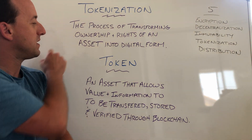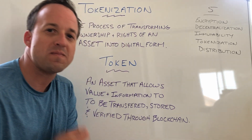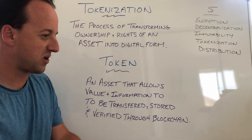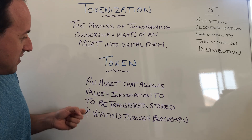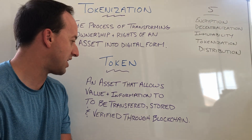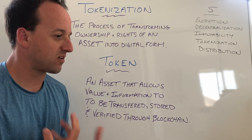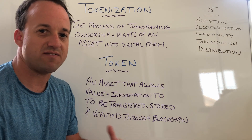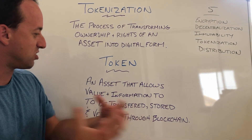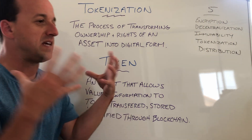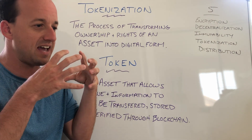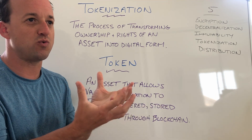So how I like to think of tokenization, or how I like to define it: the process of transforming ownership and rights of an asset into digital form. And a token — we hear coins and tokens all the time. A token to me is an asset that allows the value and information to be transferred, stored, and verified through the blockchain. Tokenization is taking from an idea or a hard object and transforming it, creating a token to represent its value.